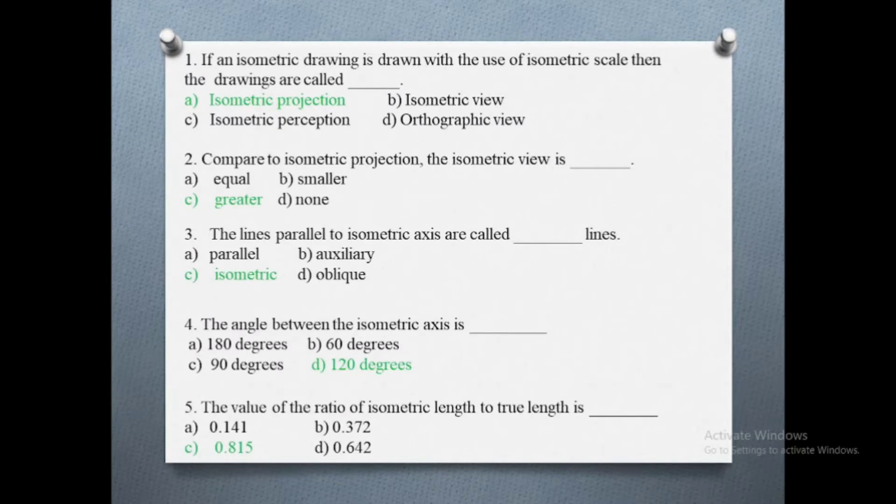Fourth question: the angle between the isometric axis is. Options are: a) 180 degrees, b) 60 degrees, c) 90 degrees, d) 120 degrees. The correct answer is 120 degrees.